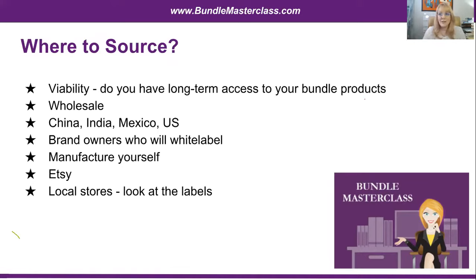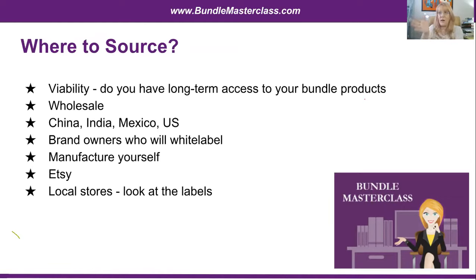I like to use local stores for bundle ideas. I'll go in and browse — I recently built out a soap bundle concept by buying some bars of soap at a local store. The key is to make sure the soap isn't private-labeled by that store. For instance, the dollar store has its own brand — if you look on the back, it says momentum brands — so you can't go directly to that manufacturer at a better price. Instead, I look for products in stores that are not private-labeled by that store. I look on the back, find the actual manufacturer — say, XYZ Soap Company in California — and then I can go directly to that company, sign up for a wholesale account, and source directly from them.